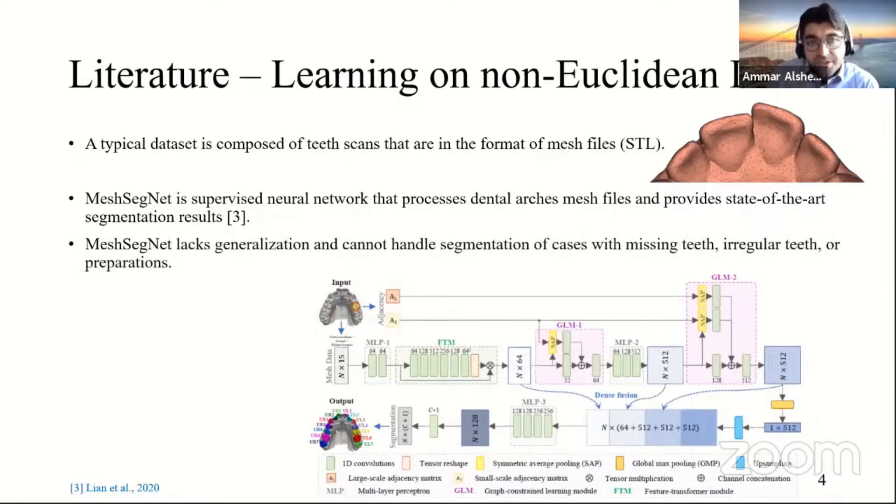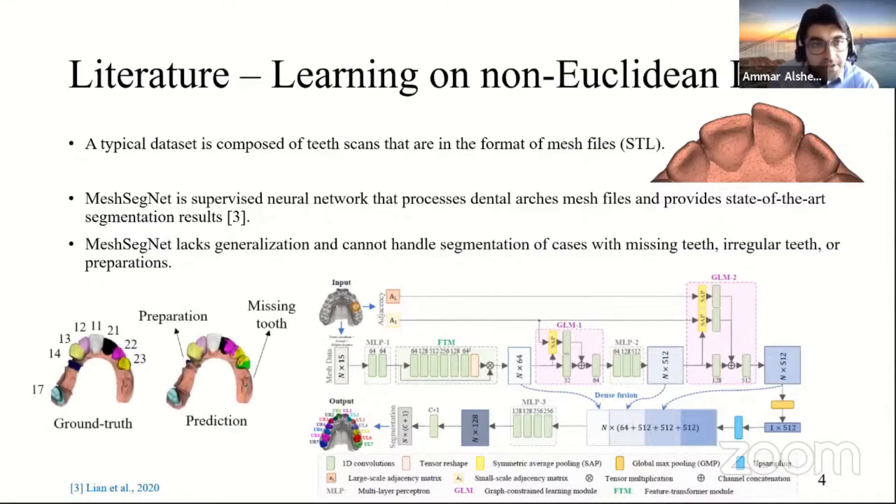However, MeshSegNet lacks generalization and cannot handle segmentation of cases with missing teeth, irregular teeth, or preparations. Here is an example in the picture that shows a prediction of a ground truth using the MeshSegNet model. And you can see in the picture, for example, tooth number 14 is a preparation that a dentist prepares to receive a crown. And in the prediction of the model, we can see that the labeling of the preparation was not done accurately. And also, due to the fact that the dental arch is missing some teeth, we can see that the labeling of other teeth on the right side of the arch is mixed, which means that there is no correct labeling on teeth because of the missing tooth on the arch. So the problem is generalization.